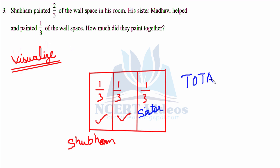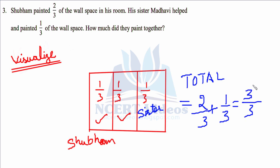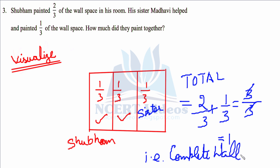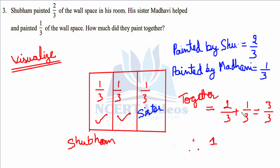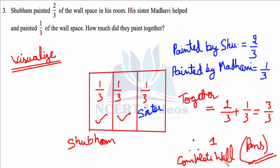Madhavi painted the remaining one over three, so the whole wall gets completed. Total is one over three plus one over three plus one over three, or two over three painted by Shubham plus one over three painted by his sister, giving three over three, which equals one. One means the whole complete wall has been painted by both of them. That is your answer for question 3.